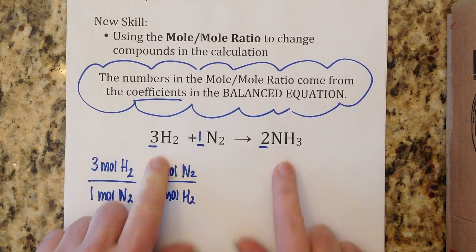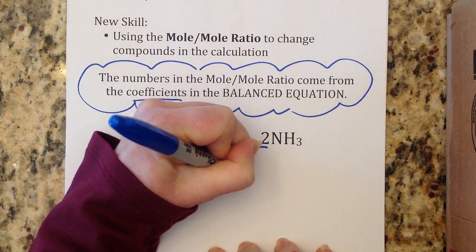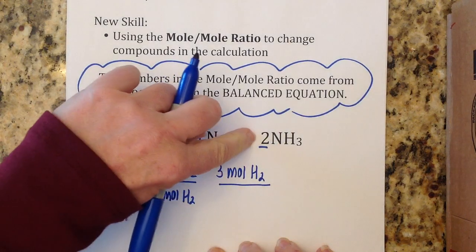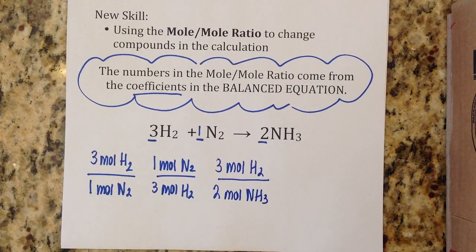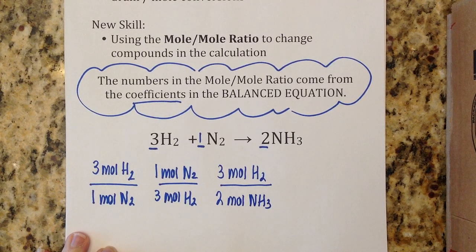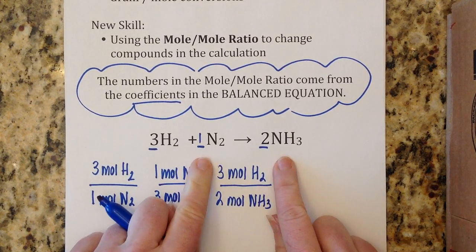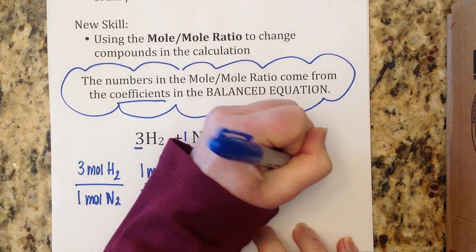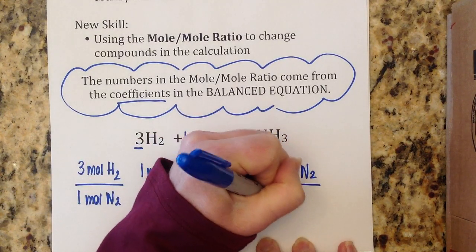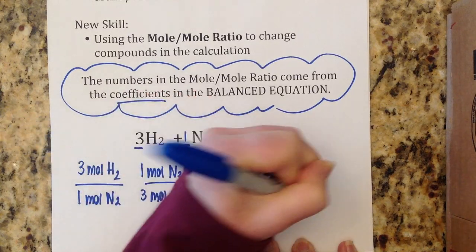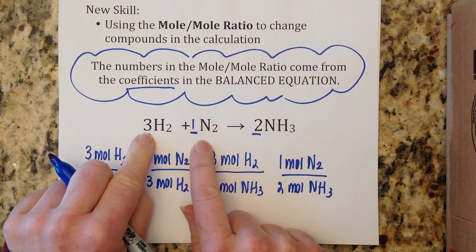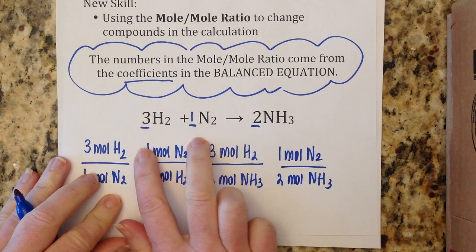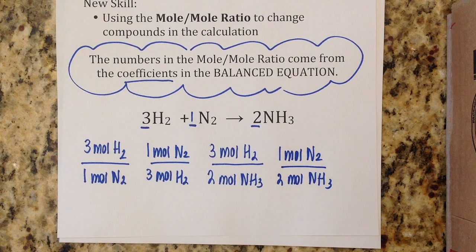I could say there are three moles of hydrogen gas per every one mole of nitrogen gas. I could flip that and say there is one mole of nitrogen gas to every three moles of hydrogen gas — that's exactly the same thing. What's important is that you have the right coefficient with the right substance. I could cross sides of the equation and say there are three moles of hydrogen gas per every two moles of ammonia, or flip it: two moles of ammonia per every three moles of hydrogen gas.